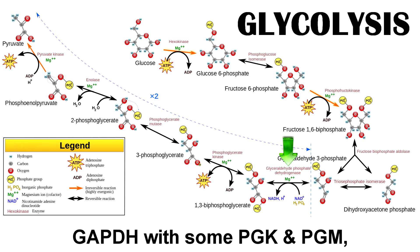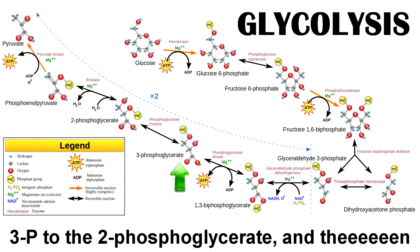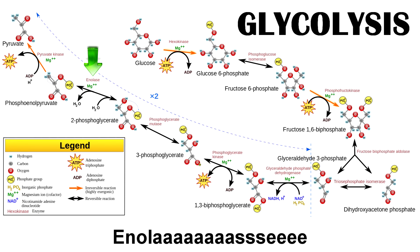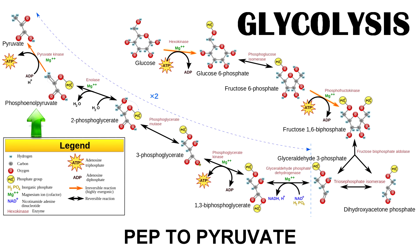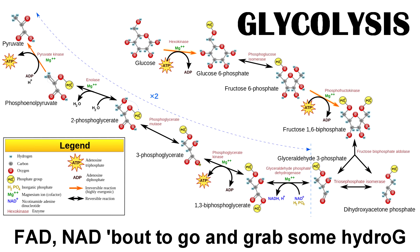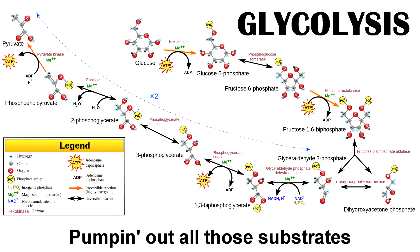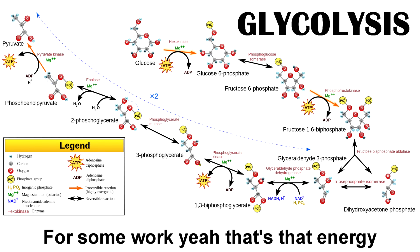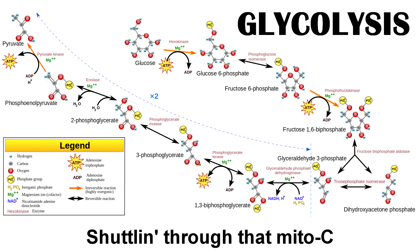With some PGK and PGM, phosphoglycerate mutase, to the 2-phosphoglycerate. Then enolase. PEP to pyruvate. FAD, NAD, about to go and grab some hydrogen. Pumping out all the substrates for some work, yeah, that's that energy.